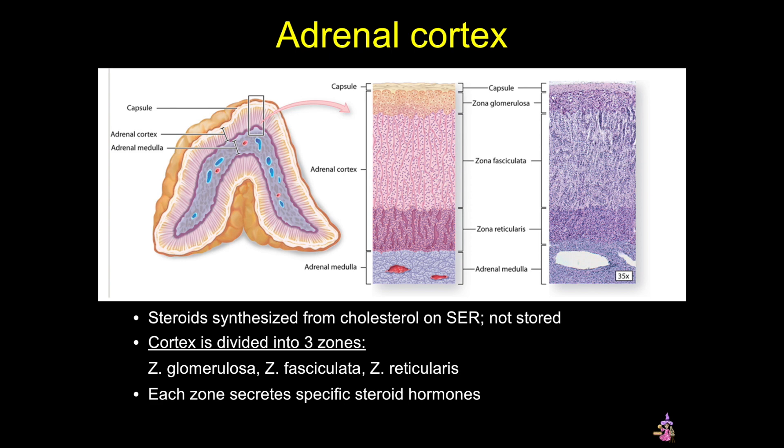The zones and their products can be easily remembered by the mnemonic 'Go Find Rex, Make Good Sex.' Now I'll take a closer look at each of these zones, starting at the capsule and working our way to the medulla.